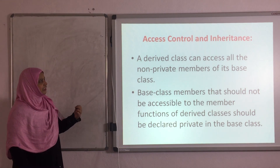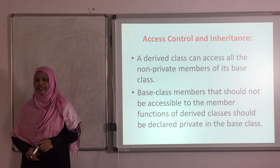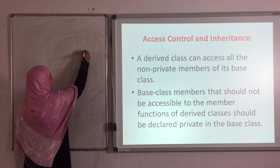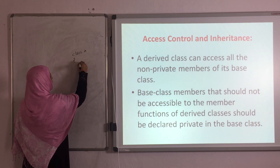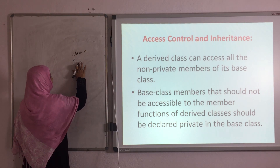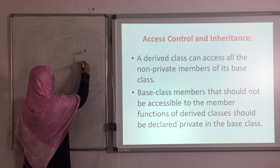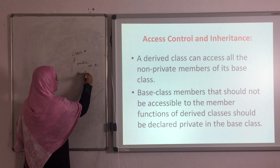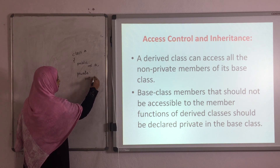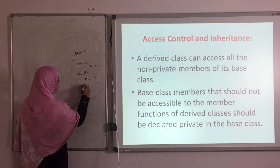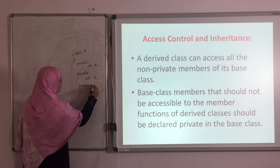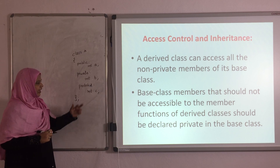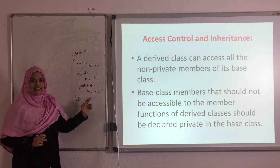Welcome back students. Here in Access Control and Inheritance, in this case, for example, class A is there. In class A, I am going to declare 3 data members: public int A, private int B, and protected int C. These 3 are the data members: A, B, C.